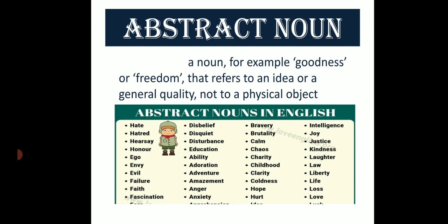Ab baat karenge abstract noun ki — bhav vachak sangya ki. A noun — for example goodness or freedom — that refers to an idea or a general quality, not to a physical object. Jis sangya se kisi vastu ke gun, kariya ya avastha ka bodh ho, use bhav vachak sangya kehte hain. Some abstract common nouns are: hate, hatred, disbelief, bravery, joy, intelligence, justice, evil, ego, ability. Yeh sab bhavna ko bata rahe hain.